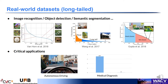In our work, we focus on real-world datasets that are often imbalanced. In the distribution of labels, we see many samples are populated in some classes while very few samples are available in other classes. Imbalanced datasets range from image recognition to object detection and semantic segmentation. There are also critical applications where the existing datasets are heavily imbalanced, such as autonomous driving and medical diagnosis.